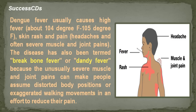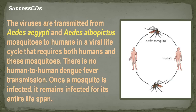Dengue fever usually causes high fever, skin rash and pain. The disease has also been termed breakbone fever or dandy fever because the unusually severe muscle and joint pains can make people assume distorted body positions or exaggerated walking movements in an effort to reduce their pain. The viruses are transmitted from Aedes aegypti and Aedes albopictus mosquitoes to humans in a viral life cycle that requires both humans and these mosquitoes.